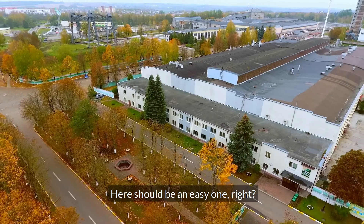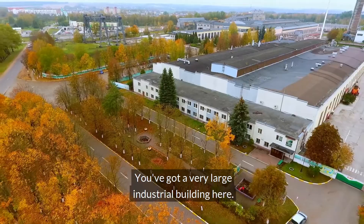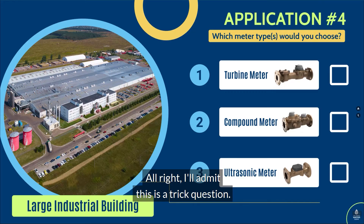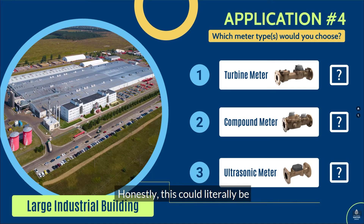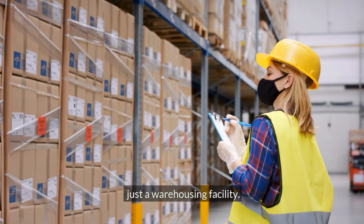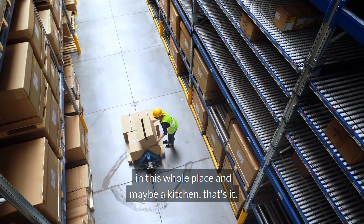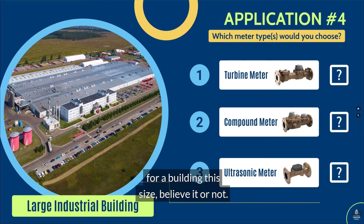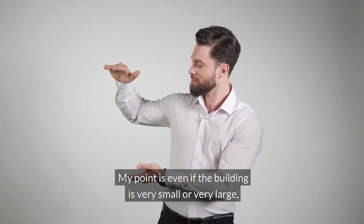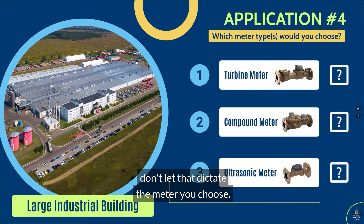Application number four: a very large industrial building — what meter would you use? This is actually a trick question. You don't really know, and that's the point — never let the building size dictate the type of meter. You might look at it and say it's a very large building so you need a turbine meter. But honestly, this could literally be just a warehousing facility with only four bathrooms and maybe a kitchen. I might be able to get away with a disc meter for a building this size, believe it or not. Even if the building is very small or very large, don't let that dictate the meter you choose — understand what they're actually doing in that building.